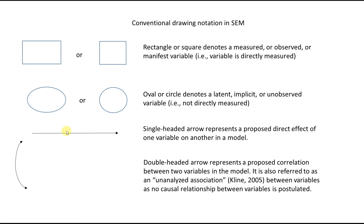A single-headed arrow reflects a proposed causal association from one variable to another. So if X is here and Y is here, the pointer pointing at Y means that X is proposed to cause variation in Y. A double-headed arrow reflects a covariance or correlation between two variables. It is also referred to as an unanalyzed association because we're not specifying a causal relationship, only that there is a covariation between variables.